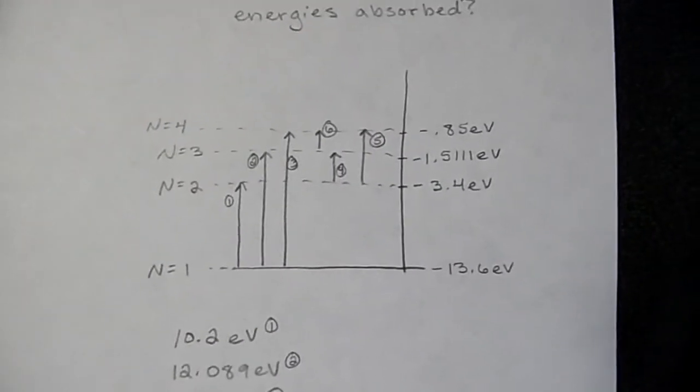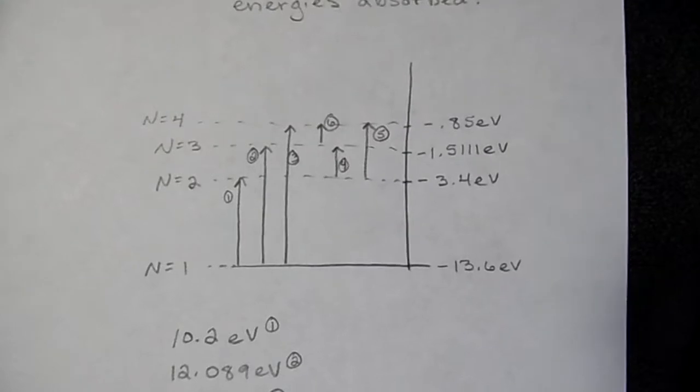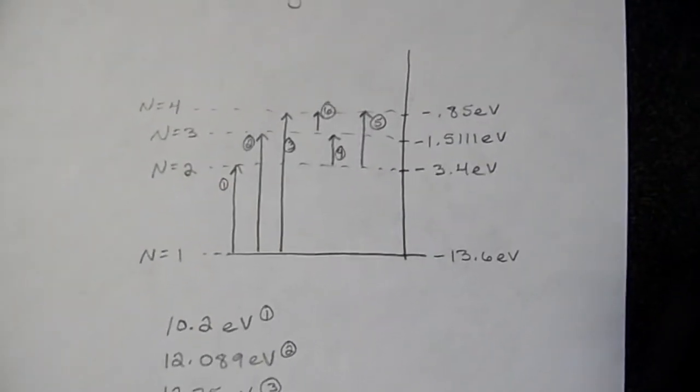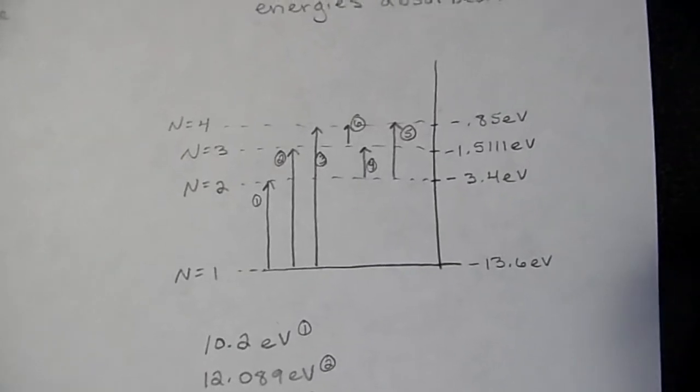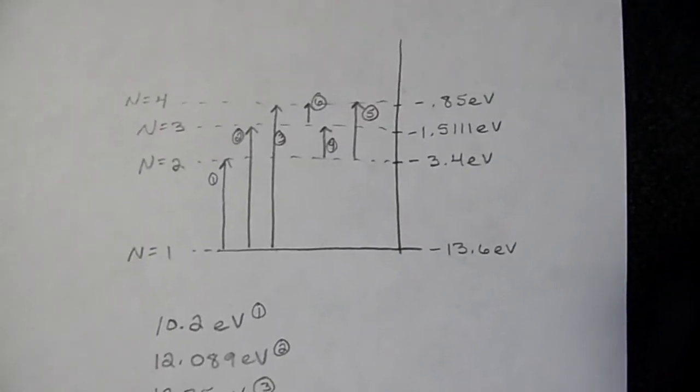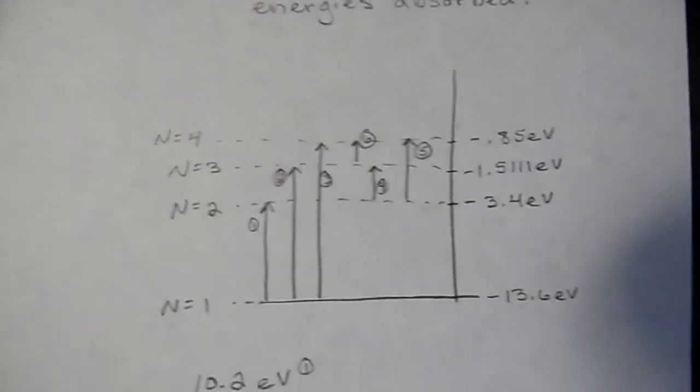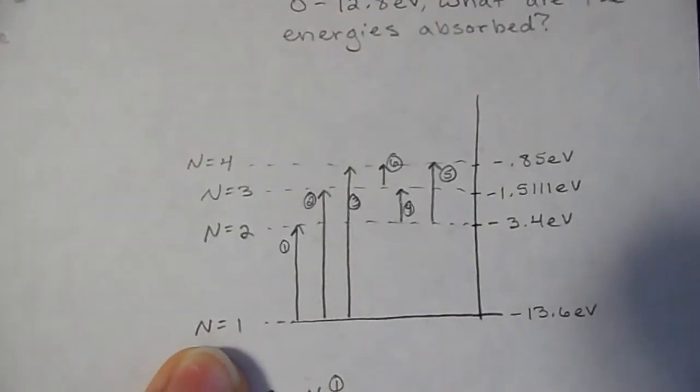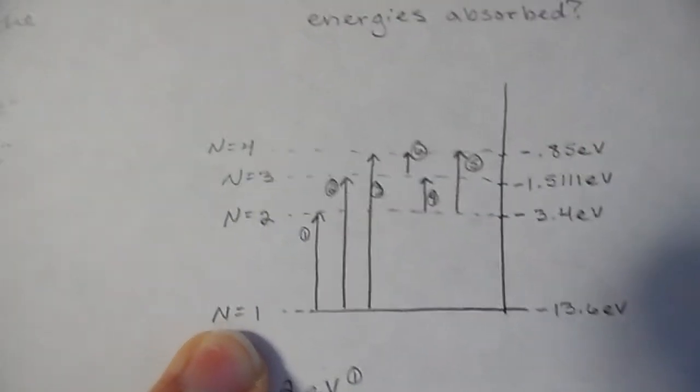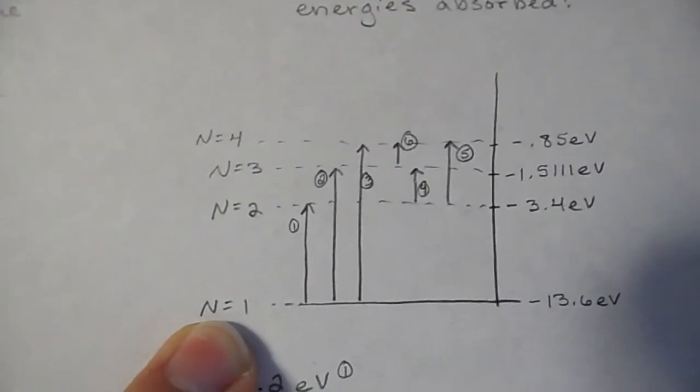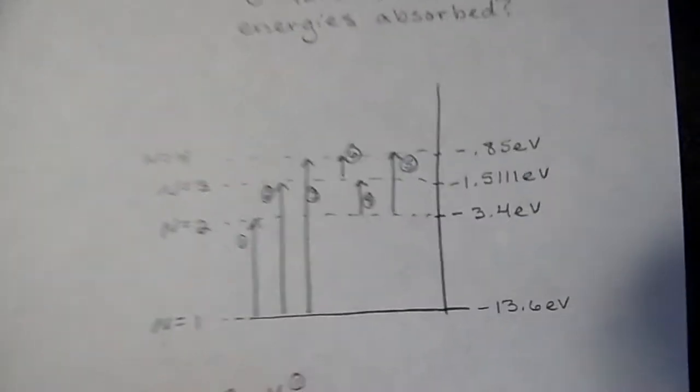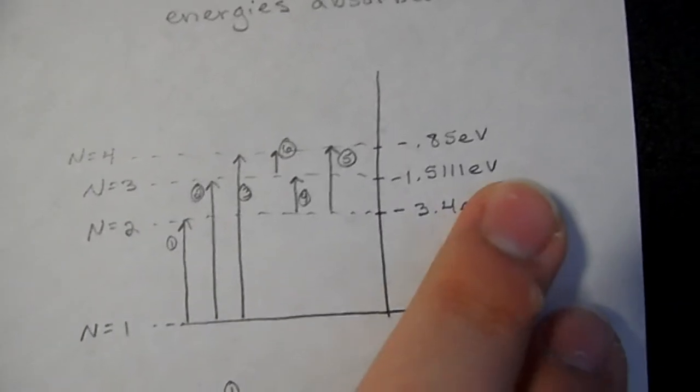This is the same exact thing as what we just did in part B, except now we're going the opposite way. So here again, instead of doing the same math just backwards, we've already decided that we have energy levels 1 through 4.